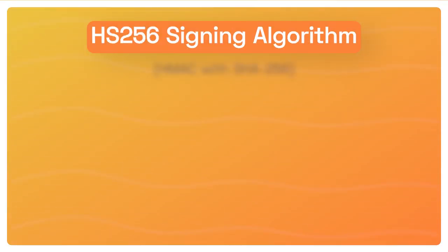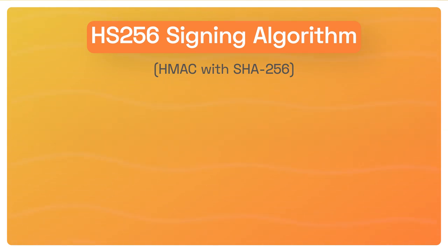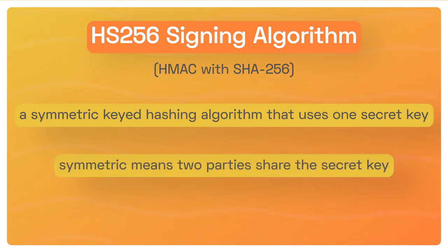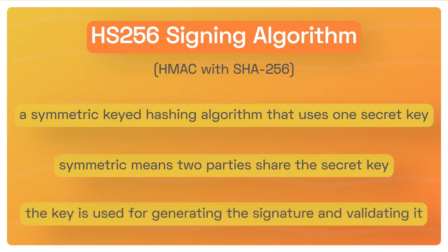JWTs are commonly signed with one of two algorithms: HS-256 or RS-256. Let's start with HS-256, or HMAC with SHA-256. It's a symmetric keyed hashing algorithm that uses one secret key. Symmetric means two parties share the secret key. The key is used for both generating the signature and validating the signature.